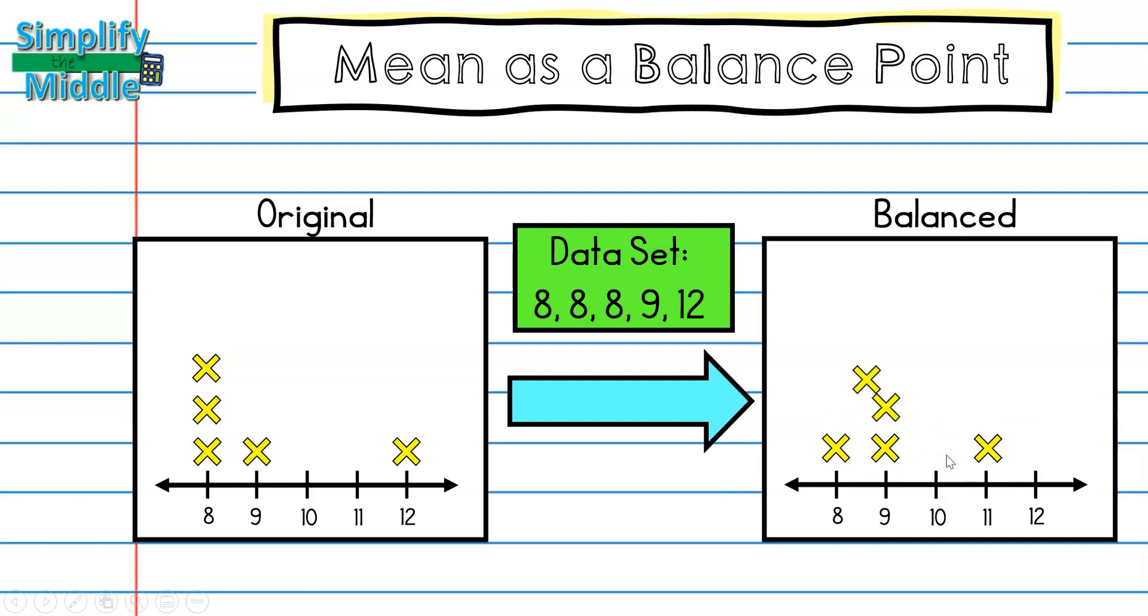And this time my rightmost outer point is actually 11, so I'll move it forward to 10. 8 goes to 9, and 10 goes to 9.